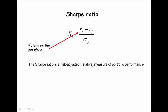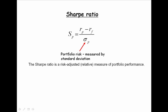In the numerator, we have the return on the portfolio, R sub P, minus the risk-free rate of return. This gives us excess market return in the numerator. In the denominator, we have the standard deviation of the portfolio. It is a measure of portfolio risk.